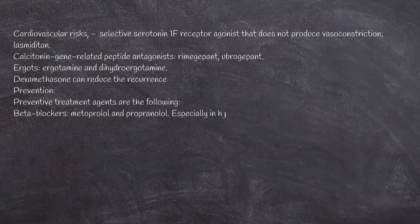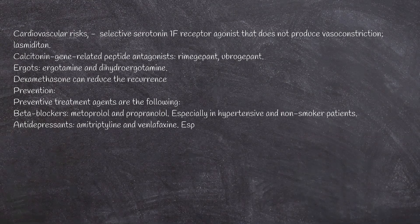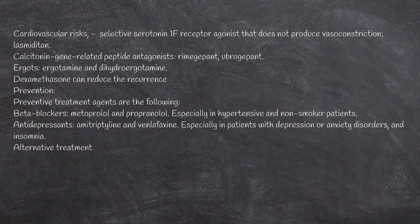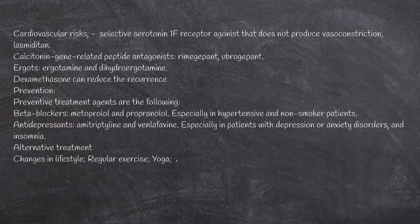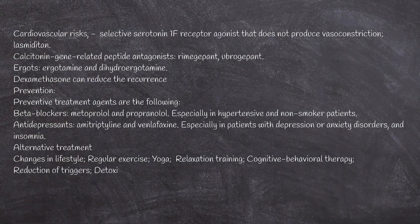Dexamethasone can reduce the recurrence of early headaches but does not provide immediate relief. For prevention, the following agents are used: beta blockers such as metoprolol and propranolol, especially in hypertensive and non-smoker patients; and antidepressants such as amitriptyline and venlafaxine, especially in patients with depression, anxiety disorders, and insomnia.